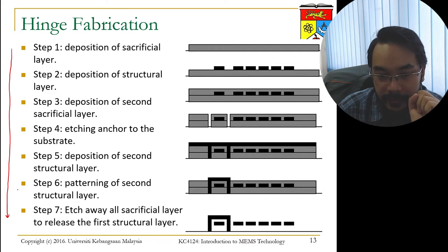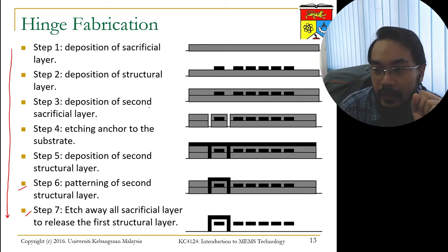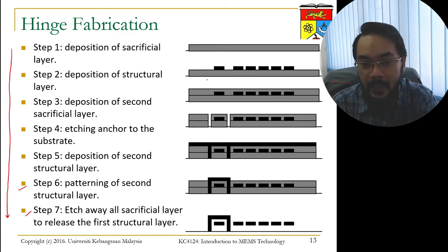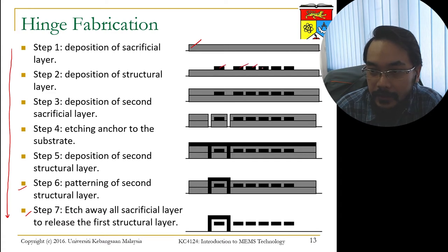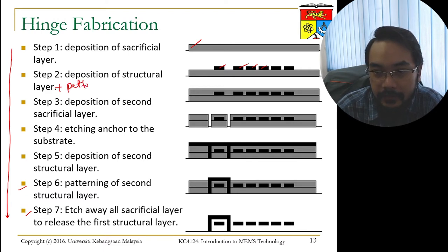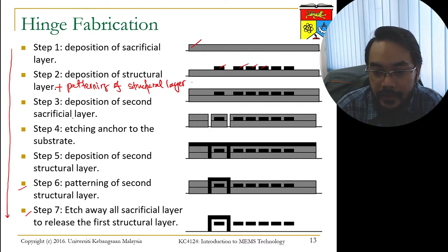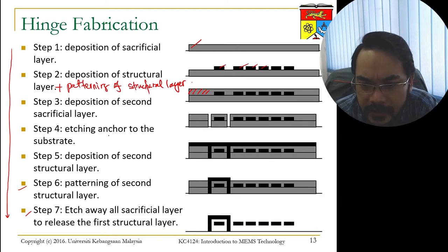This is a popular exam question because it's relatively complex — students are given a picture of a final structure and need to design the process and draw the step-by-step evolution. For a hinge structure, we can design a process flow from step 1 to step 7. The extra steps are needed because the structure is more complex and requires several layers of sacrificial material. Step 1 is deposition of the sacrificial layer (gray). Step 2 is deposition of the structural layer (black). Step 3 is deposition of the second sacrificial layer on top of the first. Step 4 is etching an anchor to the substrate.